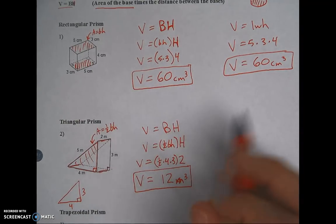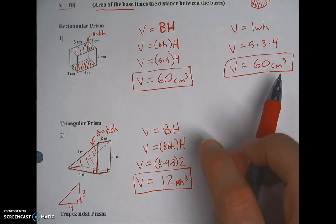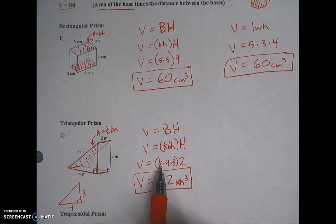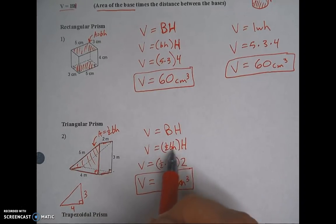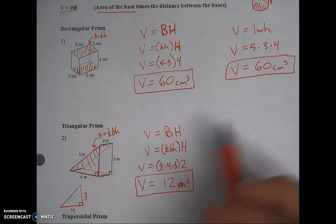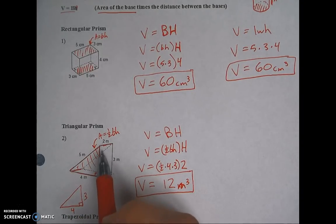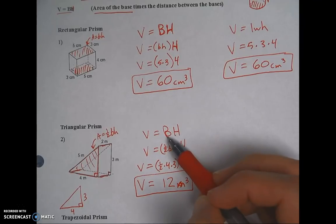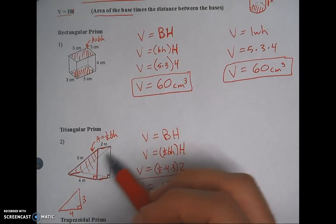Some people want to shortcut this by multiplying length times width times height and just taking half, but the problem is that the 5 was never used in our calculation. If you always say 'one-half times all three numbers,' you might accidentally use the 5, which doesn't belong. So we stick to area of the base times the height of the whole shape to stay precise.